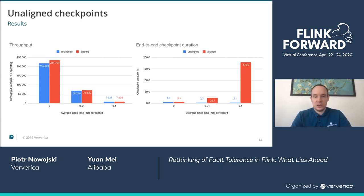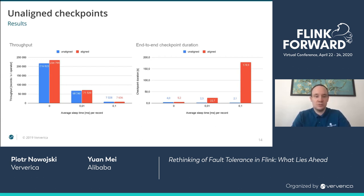On the first graph, you can see that throughput with unaligned checkpoints has degraded by some margin. However, the slowdown is barely noticeable if any sleep time is configured. On the second graph, you can see how much checkpoint duration can improve when using unaligned checkpoints. Note: if your records are very quick to process, it doesn't make sense to spill them — it's better to wait for alignment to complete, as you can see in the similar aligned and unaligned checkpoint durations in the highest throughput scenario. Your mileage may vary depending on time to process a single record, size of the record, amount of buffered back-pressure in-flight data, and the target file system where you want to spill the data.